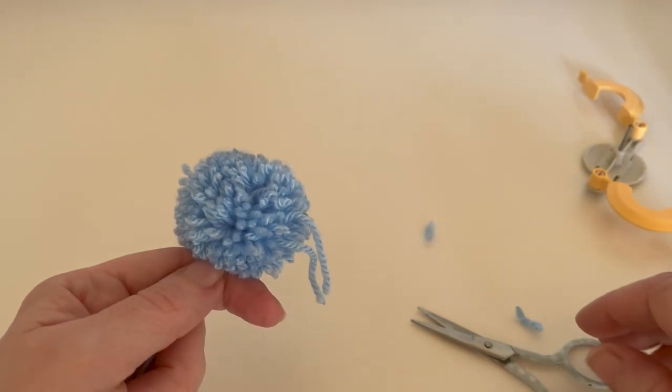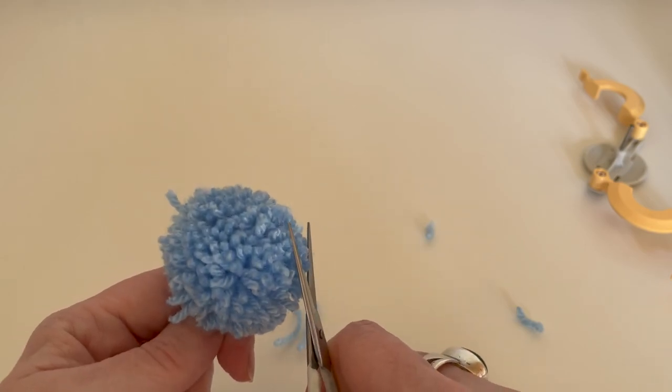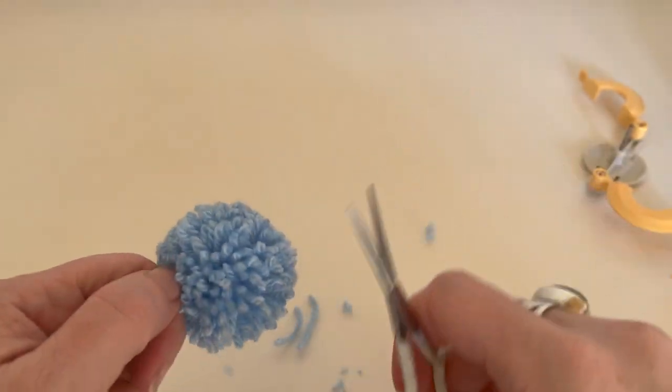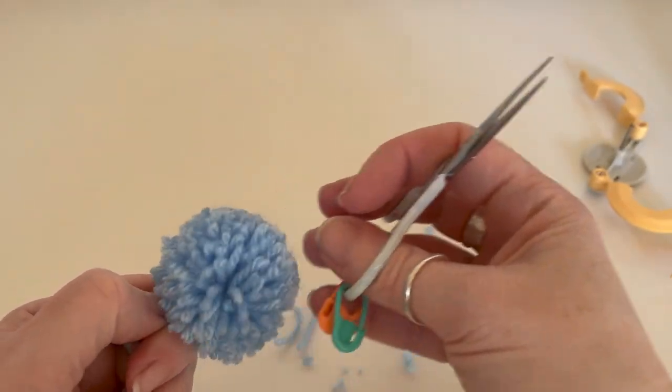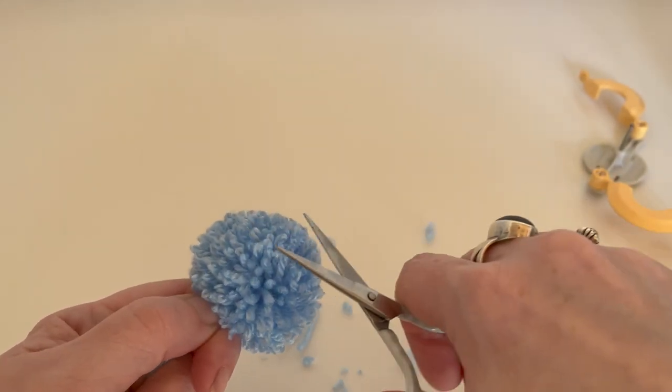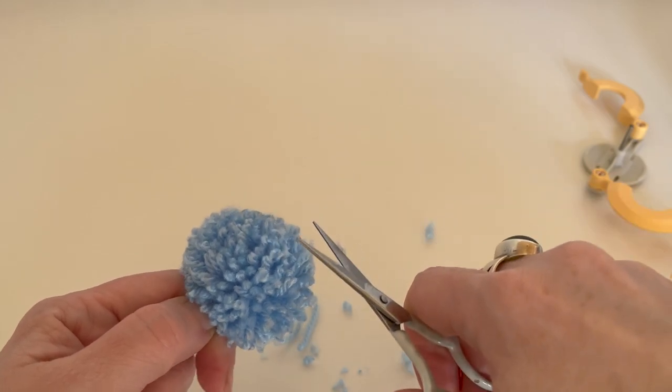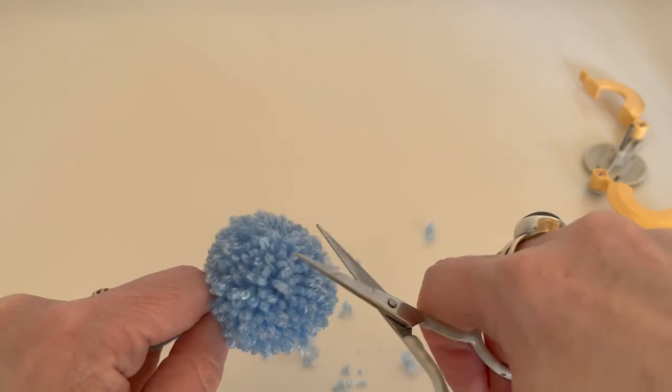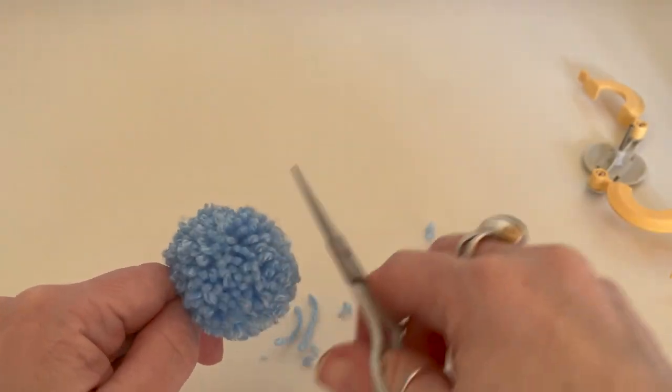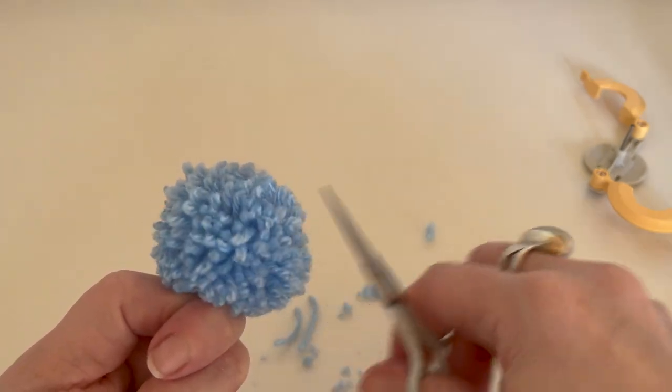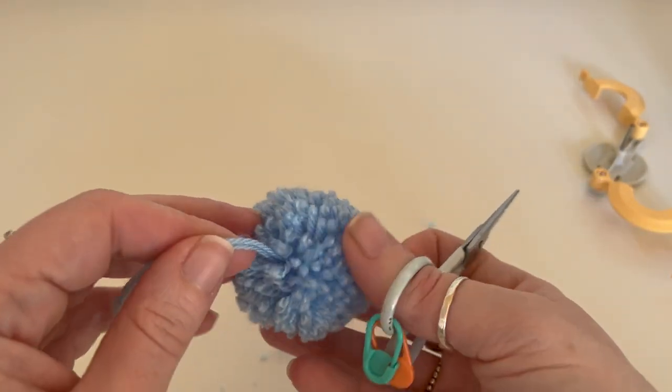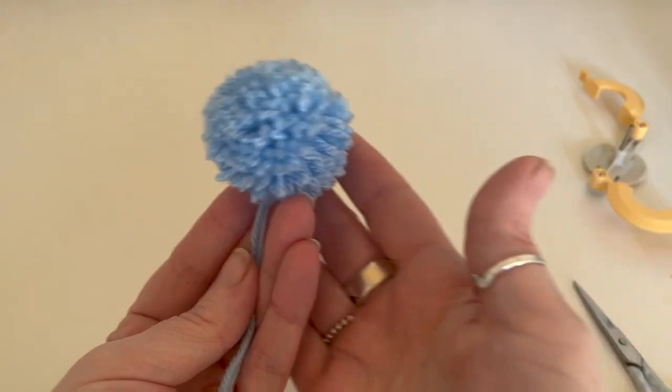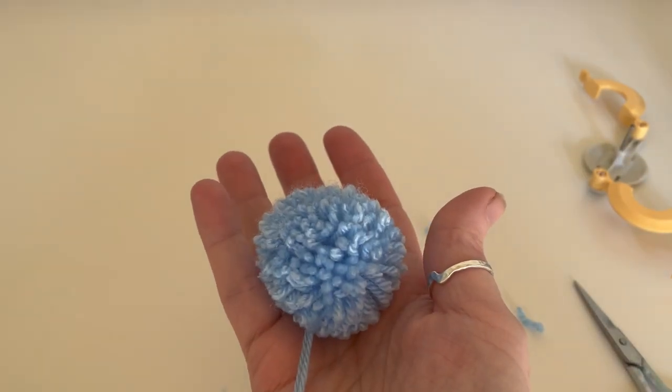And now what you can do is give it a haircut to make sure it's all nice and even. Just go around and just cut any longer bits and just go through with your scissors and just give it a bit of a fluff up. And there you have your pom-pom. Honestly they are game changers, they are so easy to use.